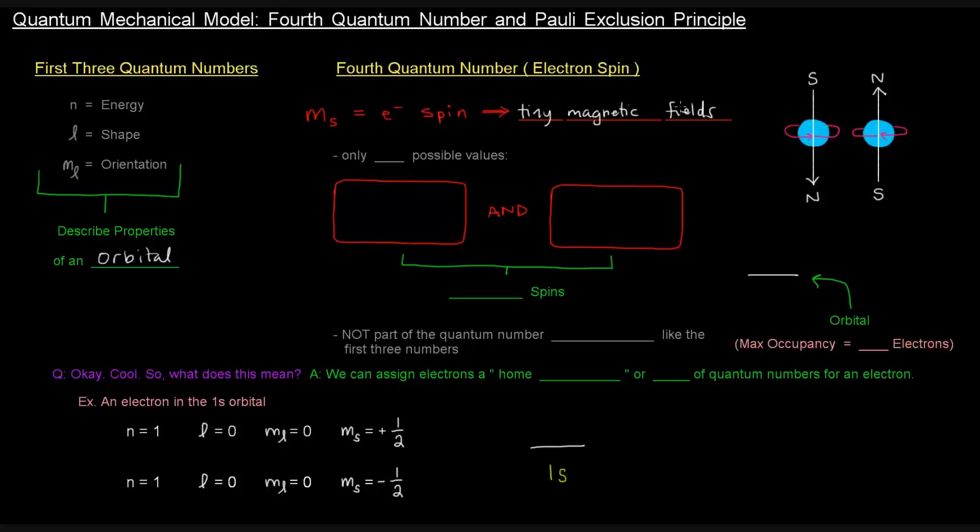And so we kind of represent that pictorially like this. And they can spin in opposite directions like this, forming magnetic fields. So there's only two possible values of this magnetic spin. We can have positive one-half, which is represented as an arrow pointing up, and negative one-half, which is represented by an arrow pointing down.